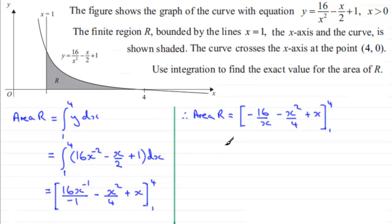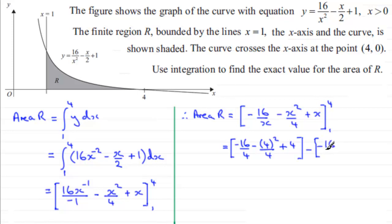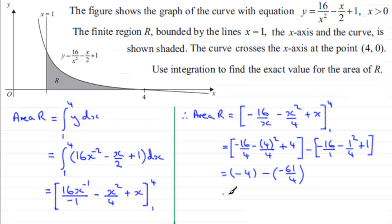Substituting x equals 4: we get minus 16 over 4, minus 4 squared over 4, plus 4. Then we subtract what we get when we put x equals 1 in: minus 16 over 1, minus 1 squared over 4, plus 1. Working this out, the first bracket comes to minus 4, and we subtract the second bracket which gives minus 61 over 4. The final result is 11.25, or 11 and a quarter square units.